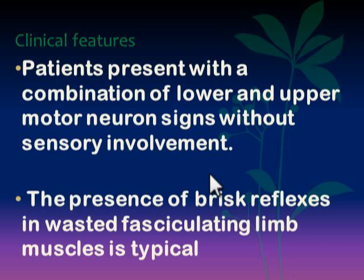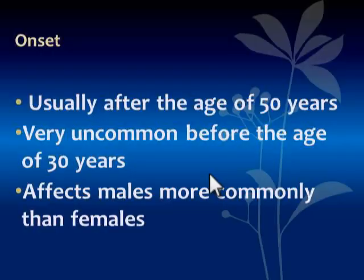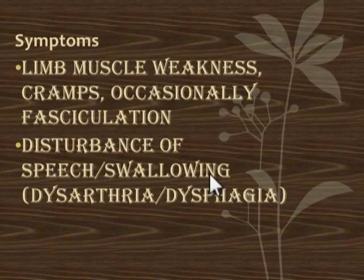Wasting and fasciculation of muscles is typical of motor neuron disease. Onset is usually after the age of 50 years, very uncommon before 30 years, and it affects males more commonly than females. Symptoms include limb muscle weakness, cramps, and occasionally fasciculations. There is also disturbance of speech — dysarthria — and disturbance of swallowing — dysphagia.